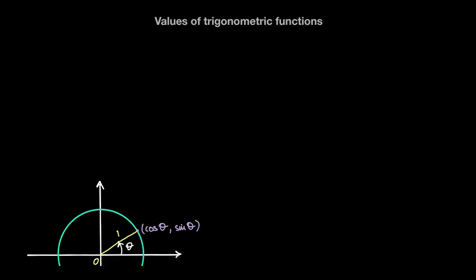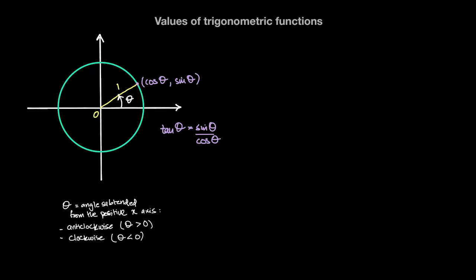Previously we learned about the unit circle — a circle with a radius of one unit and a center point at the origin, so the coordinates of the center are (0,0). If we subtend that radius by an angle theta from the positive x-axis, the x-coordinate of any point on the unit circle is defined as cosine of theta, the y-coordinate is sine theta, and tan of theta is the ratio sine theta over cosine theta. These are our three trigonometric functions: cosine theta, sine theta, and tan theta.